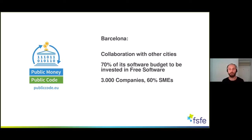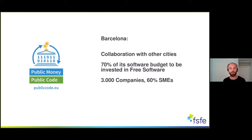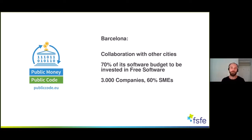I also want to highlight the example of Barcelona, which has an even more ambitious free software policy. They have a law requiring 70% of their software budget to be invested in free software. This led to a situation where, of 3,000 companies involved in procurement procedures and coding for the city of Barcelona, 60% were small and medium enterprises — the local partners I just mentioned. So you can foster your local market even as a city by switching to free software. On all levels — international, national, and local — whenever you bring free software regulations into place, it will help your local IT market.